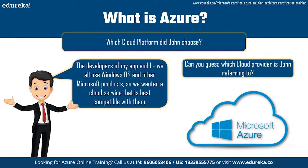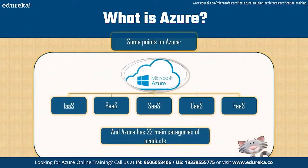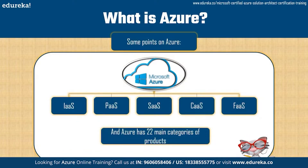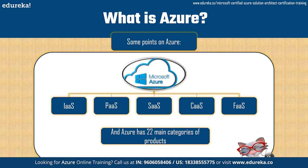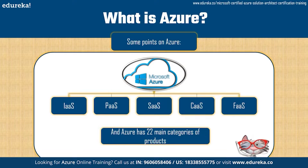Before we talk about the services, let's find out some interesting things about Azure. Just like every other cloud platform, Azure provides five distinct types of services: infrastructure as a service, platform as a service, software as a service, container as a service, and functions as a service. Apart from that, Azure has 22 main categories of products.